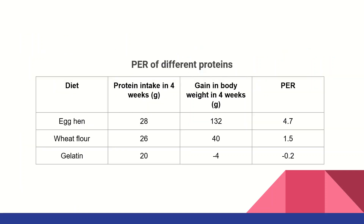PER values of different proteins: egg (hen) — 28 grams protein, gain in body weight is 132, PER is 4. Wheat flour PER is 1.5. Gelatin — weight gain is minus 4, PER is minus 0.2. Gelatin is nutritionally poor; hair and nails are also protein but have no biological value for nutrition.